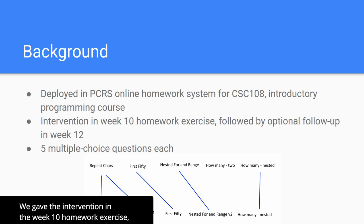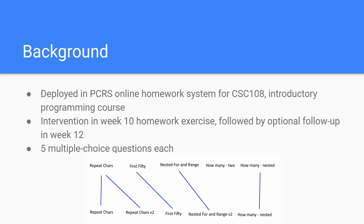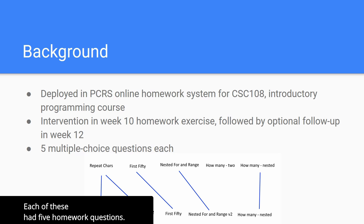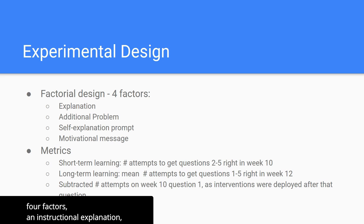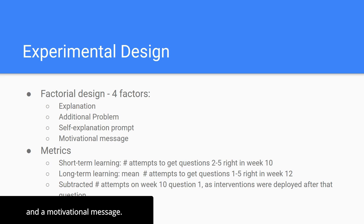We gave the intervention in the week 10 homework exercise, followed by an optional follow-up in week 12. Each of these had five homework questions. We used a factorial design for the experiment with four factors: an instructional explanation, an additional problem, a prompt to give an explanation, and a motivational message.